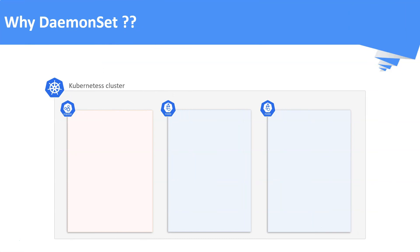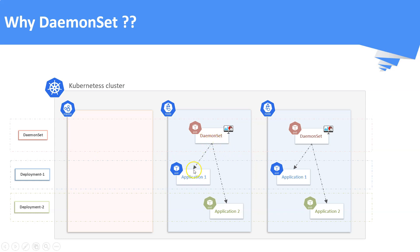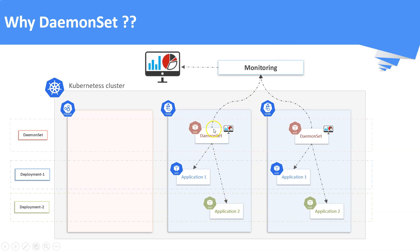Why DaemonSet? One of the best use cases of a DaemonSet is application monitoring and logging. The main purpose of a daemon is to collect information about the other objects within the cluster and improve the performance of the Kubernetes cluster by distributing maintenance tasks and support services. For example, a DaemonSet deployed with monitoring agents helps to absorb monitoring metrics like CPU, memory, and storage from the underlying applications, then projects the same in a monitoring dashboard.